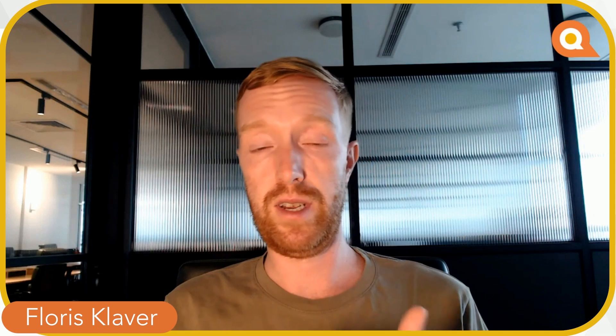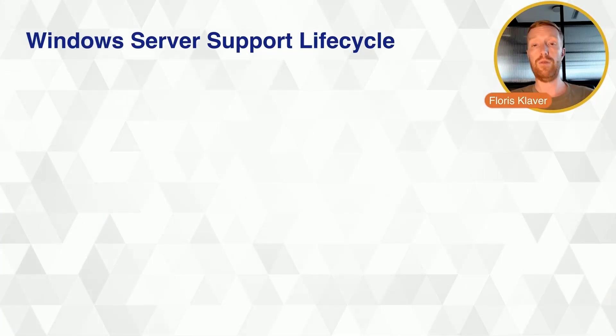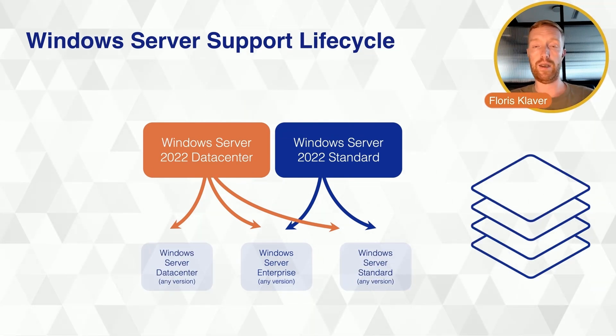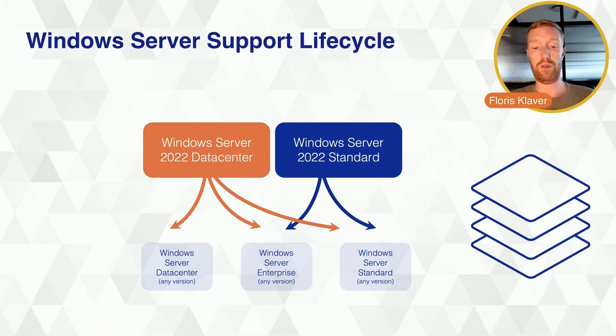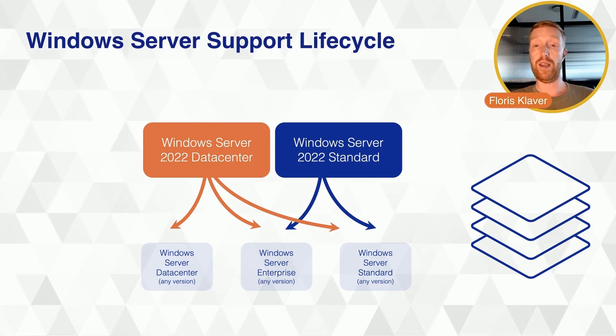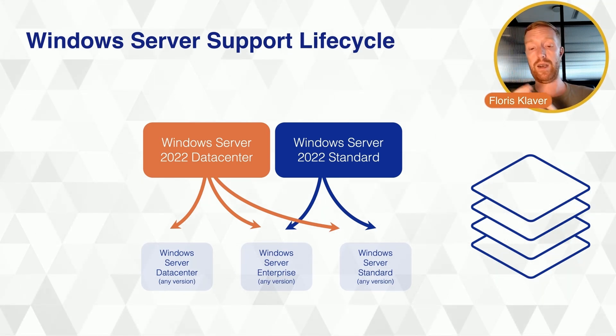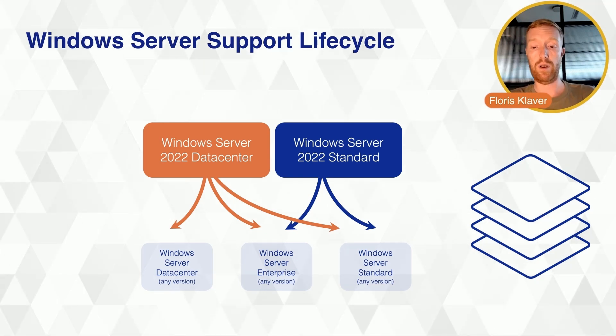If you're still running 2003 or even 2008, this might be important to you — though I suggest you don't use those versions as Microsoft no longer supports them. Because of down edition rights, if you buy 2022 Datacenter or Standard edition with Software Assurance, it's important to understand what you can do with those licenses on very old editions. On screen, you can see the down edition rights. Notably, with both Standard and Datacenter for the latest version, you get a down edition to Windows Server Enterprise. With Datacenter, you can down-version to any edition you want, while with Standard, it's only Enterprise or Standard editions for the versions available at that time.